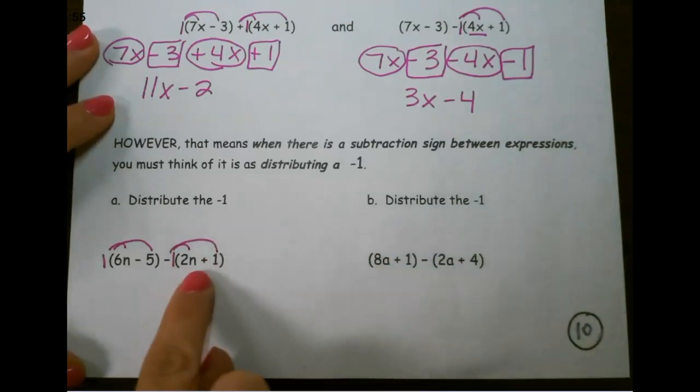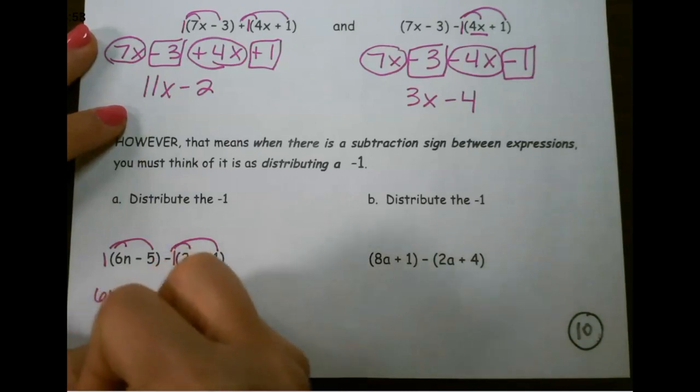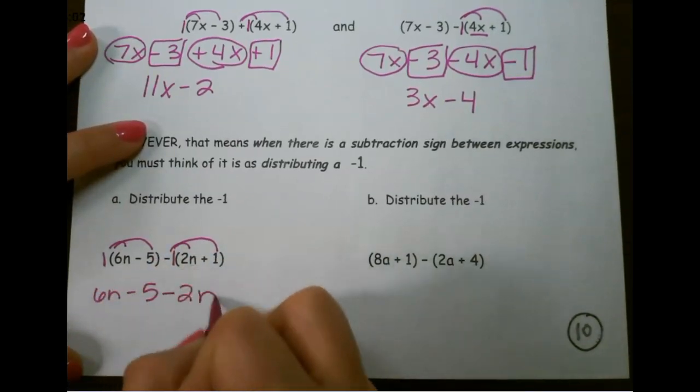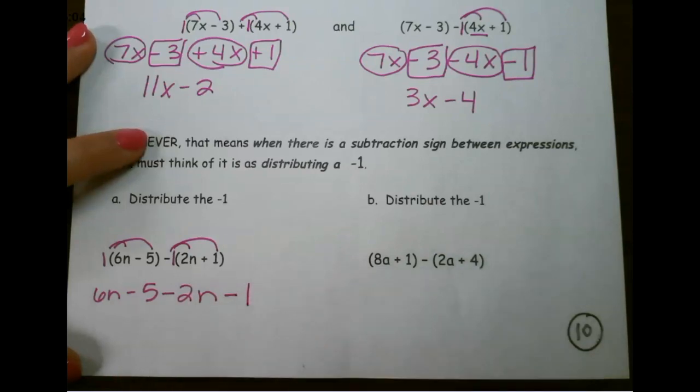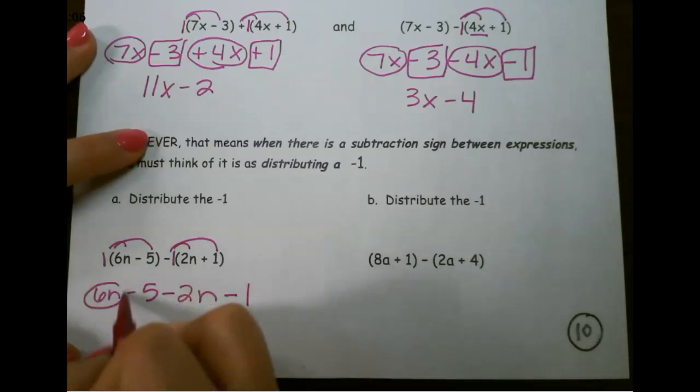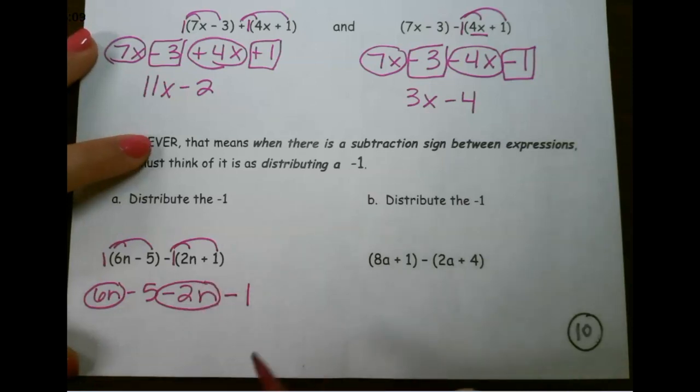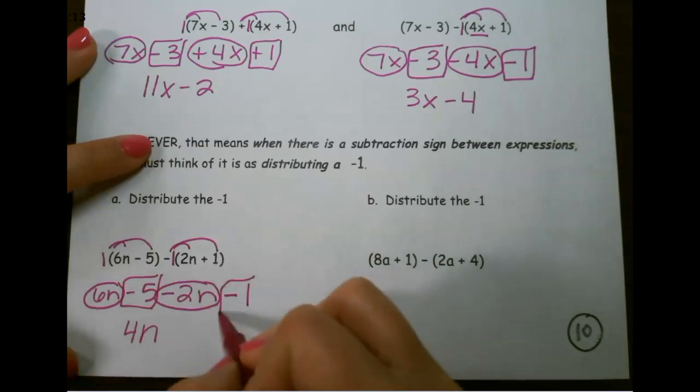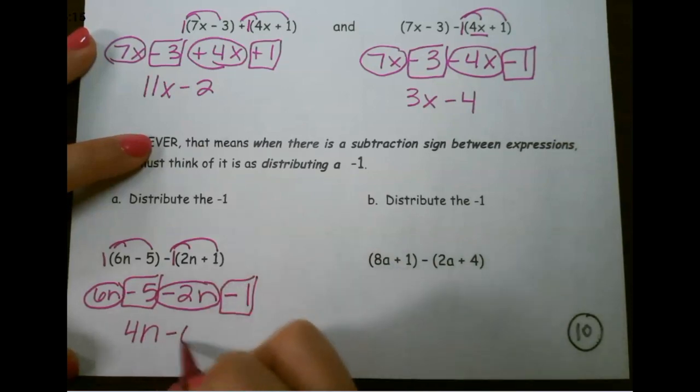So 6n minus 5. This becomes minus 2n minus 1. Combine like terms. So 6n minus 2n would be 4n, and negative 5 minus 1 is negative 6.